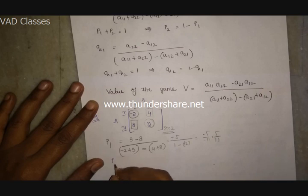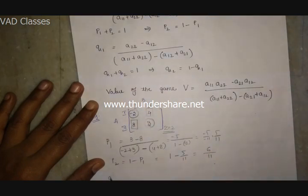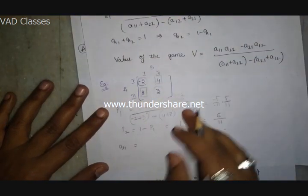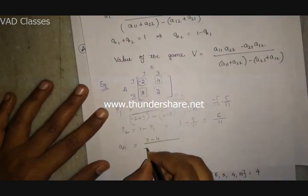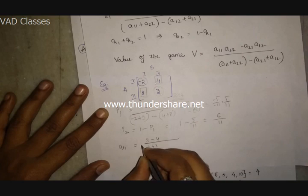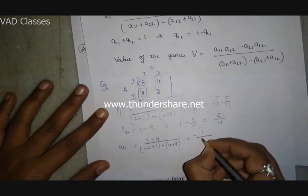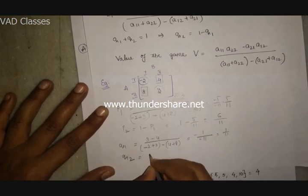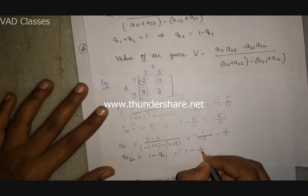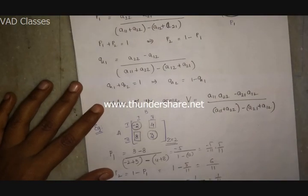For Q1 = (A22 minus A12) / denominator = (3 minus 4) / minus 11 = minus 1 / minus 11 = 1 by 11. Then Q2 = 1 minus Q1 = 1 minus 1/11 = 10 by 11. So player A's strategies are P1 = 5/11 and P2 = 6/11; player B's strategies are Q1 = 1/11 and Q2 = 10/11.